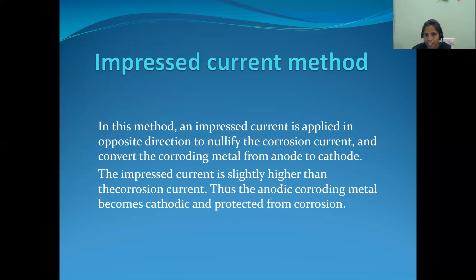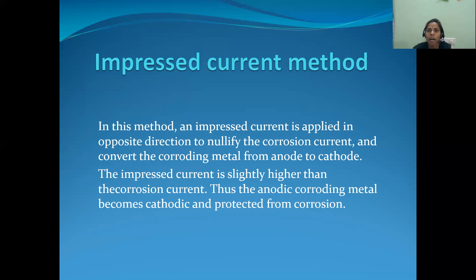When we apply more than the corrosion current in the opposite direction — from cathode to anode — the corrosion current is nullified, converting the corroding metal from anode to cathode. The impressed current is slightly higher than the corrosion current. For example, if the corrosion current is 1 volt, we apply 1.1 volts in the opposite direction to nullify it, so the anodic corroding metal becomes cathode and is protected.